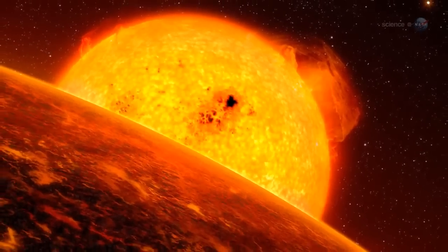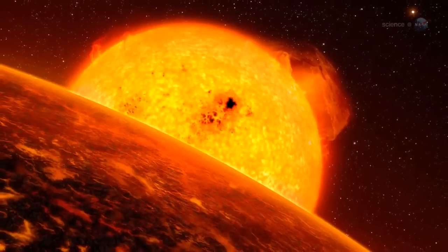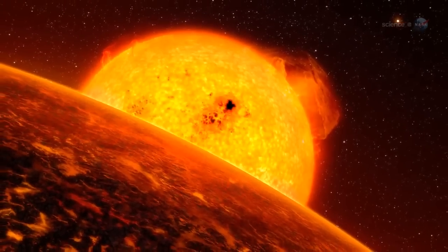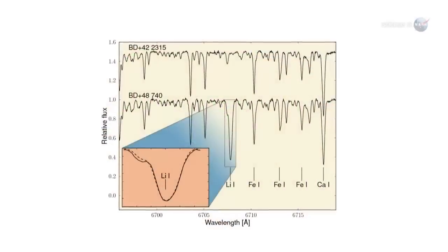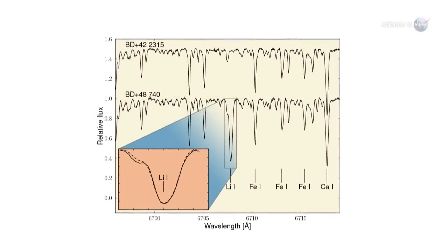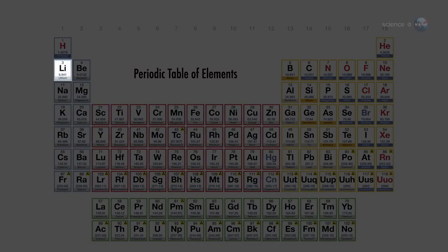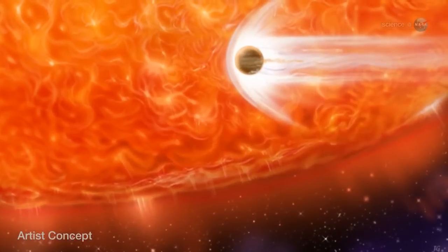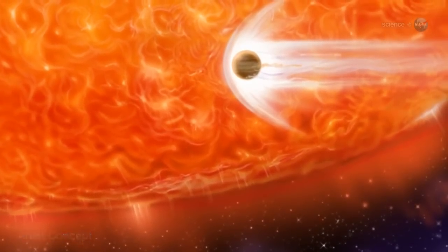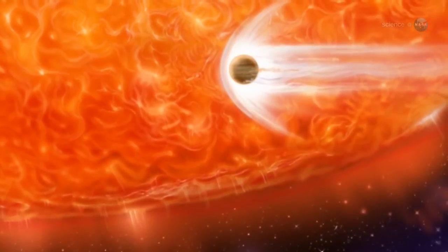Observations of red giant BD plus 48740 lend credence to the second possibility. Our detailed spectroscopic analysis of BD plus 48740 reveals that the red giant contains an abnormally high amount of lithium, says Monika Ademov, who led the study at Nicholas Copernicus University in Torun, Poland. Because lithium is easily destroyed in stars, finding lots of it in an old red giant is unexpected.